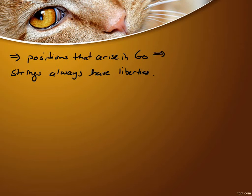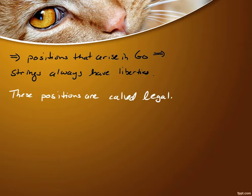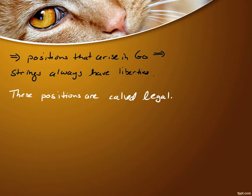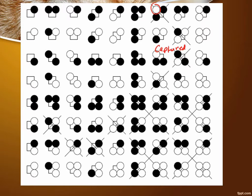Positions that arise in Go: strings always have liberties. When the strings have liberties, this is called a legal move. So when they're counting the number of legal moves, they're counting the ones where the strings have liberties. The number of positions that are legal on an M by N board is denoted L of M comma N. Here's a list of all possible moves for a four-corner board — the simplest little game. You have four possible corners, and you have three different colors you can place: white, empty, and black.